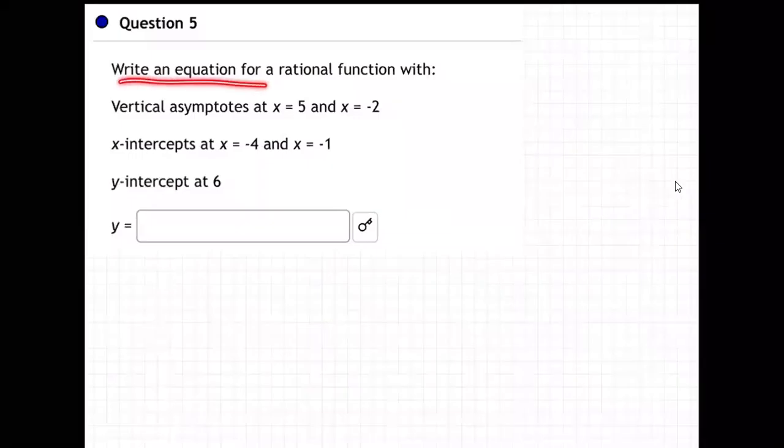So it's saying write an equation for a rational function. Rational means fraction, ratio. Ratio is a fraction. Vertical asymptotes, x-intercepts, y-intercepts. Yeah, this is not easy.